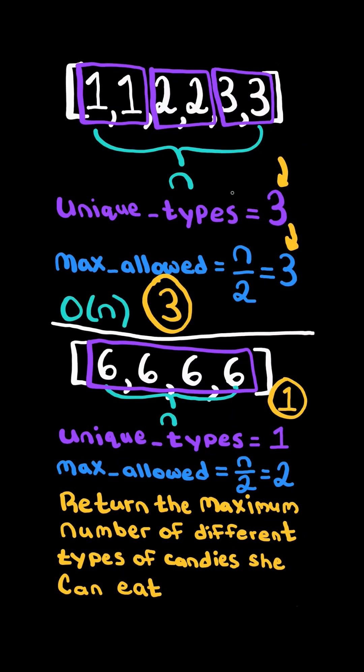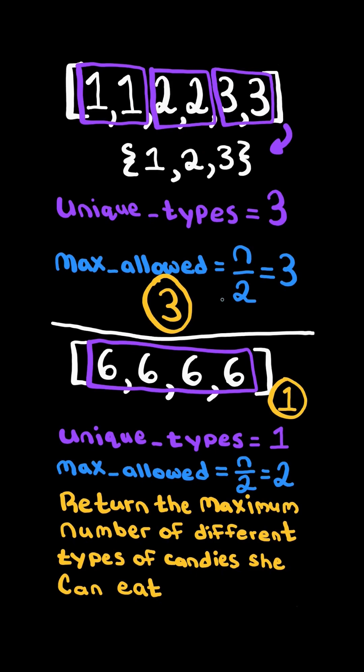We will solve this in O of n time and space. First, we can convert the list into a set, and the length of the set will equal the number of unique types of candy.